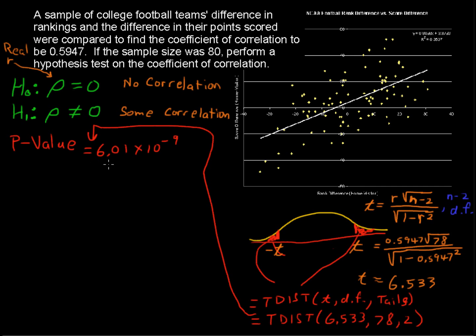That is less than, if you're not given an alpha, a significance level, you can usually assume that it could be .05. It's much less than .05, and that leads us to reject the null.